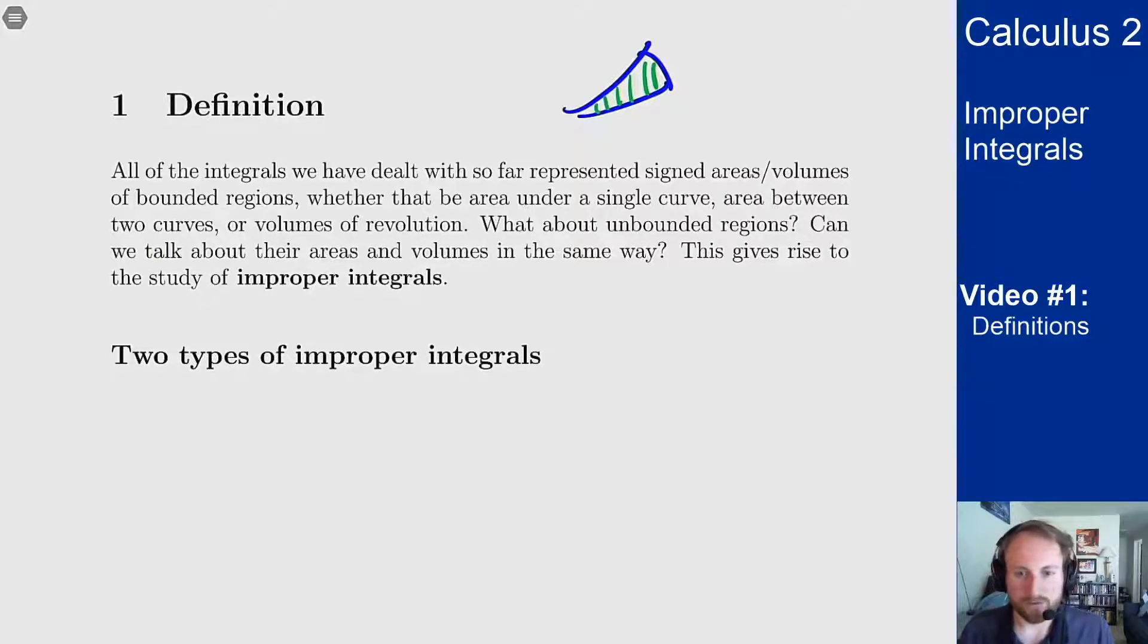You might think it weird that a region that goes off to infinity might have an area you can actually compute, but if it's getting really skinny really fast you might end up with a finite amount of area inside there even though it stretches to infinity. And that's the sort of situation we're talking about here.